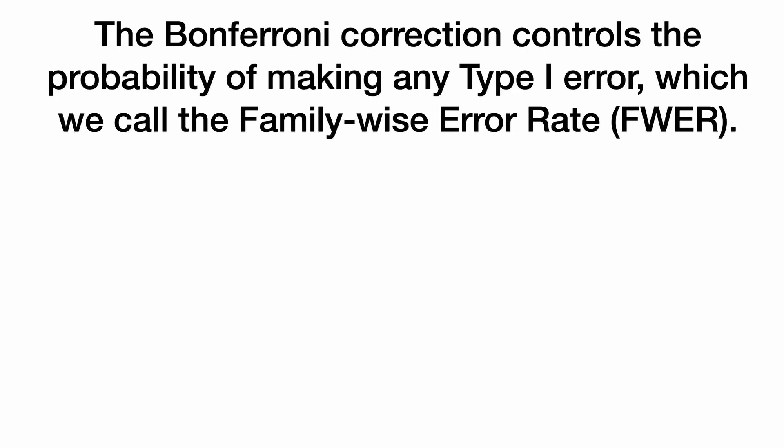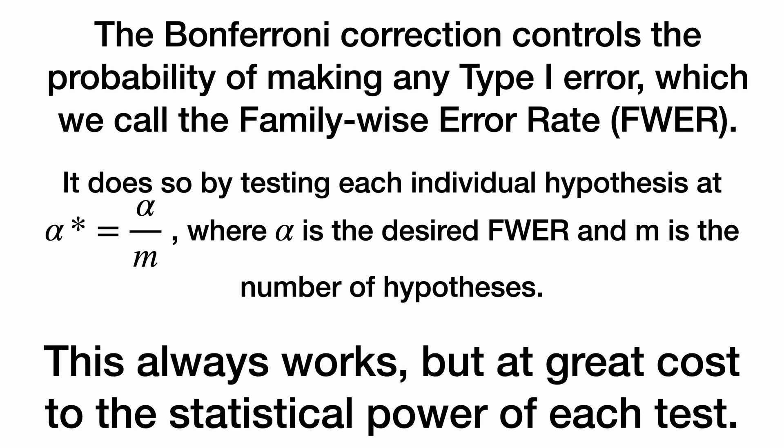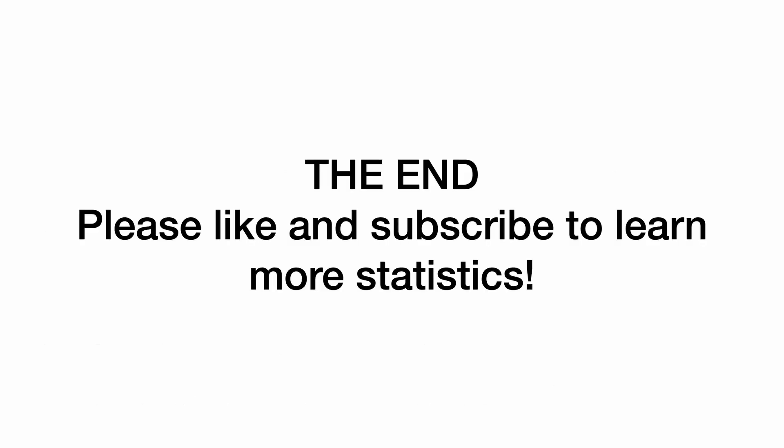In summary, the Bonferroni correction controls the probability of making any type 1 error, which we call the family-wise error rate. It does so by testing each individual hypothesis at alpha star equal to alpha over M, where alpha is the desired family-wise error rate and M is the number of hypotheses. This always works, but at great cost to the statistical power of each test.